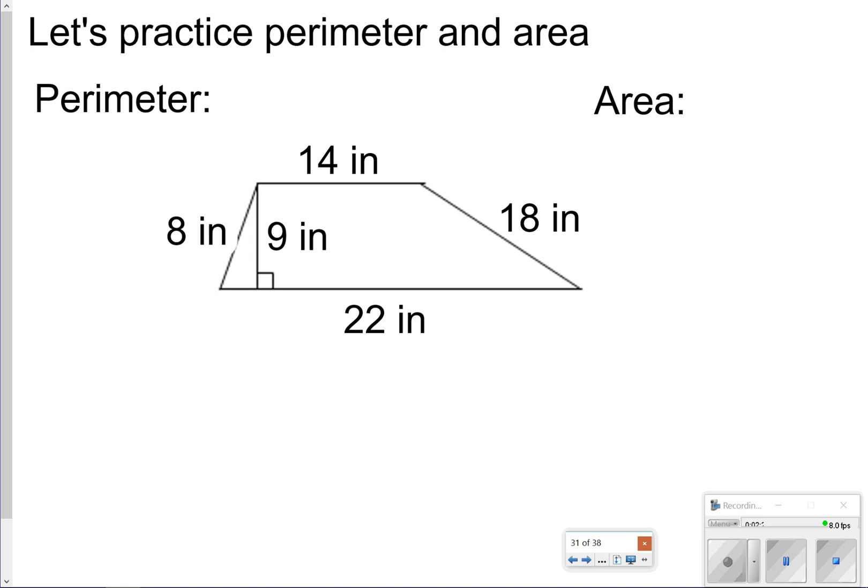The first thing we're going to try is just finding the perimeter of this trapezoid. So I'm going to be focusing on 8, 14, 18, and 22. I'm just going to add those together real quick on my calculator. After adding those together, you should get 62 inches. 8 plus 14 is 22, plus another 22 is 44, plus another 18 is 62.